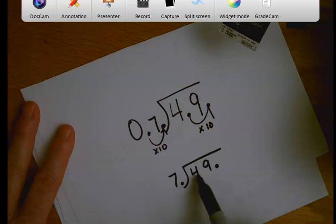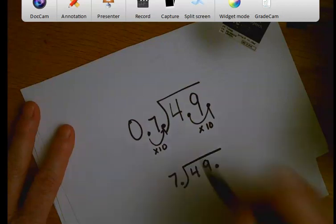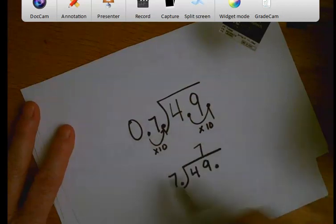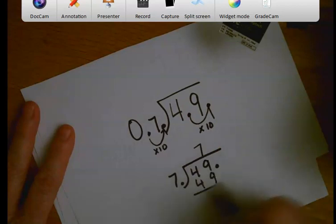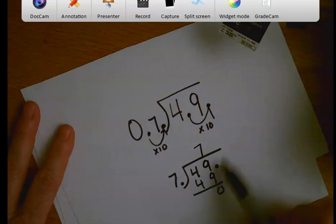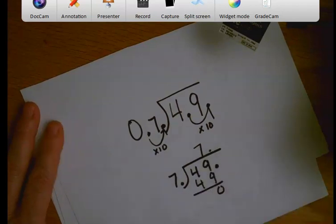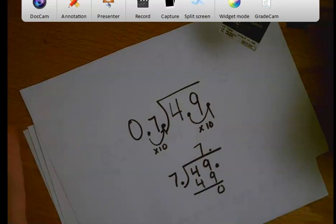7 will go into 4. No, it won't. But 7 will go into 49 seven times. 7 times 7 is 49 with zero left over. Alright. So my answer is 7. If I wanted to bring my decimal point straight up, I could put it right there, which is the same thing as 7.